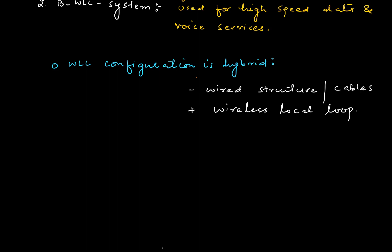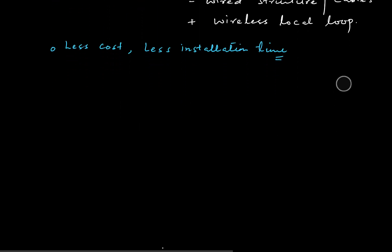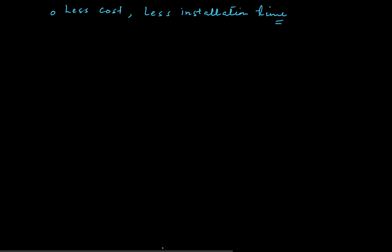The deployment of WLL Systems is quite easy as compared to wired counterparts. It has less cost for deployment and takes less installation time, making it cheaper than wired alternatives. This is because of its hybrid structure consisting of wired as well as wireless local loops.